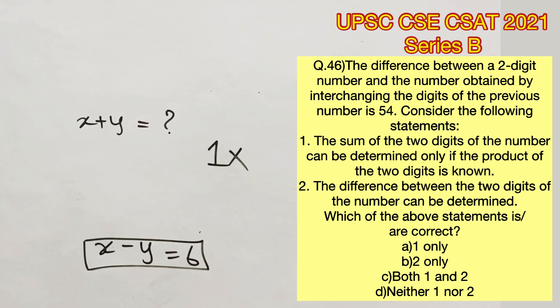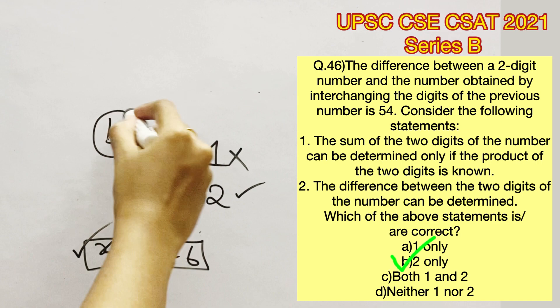The second statement says the difference between the two digits of the number can be determined. We have already arrived at the difference of the two digits so the second statement is right. Therefore option B is the right answer.